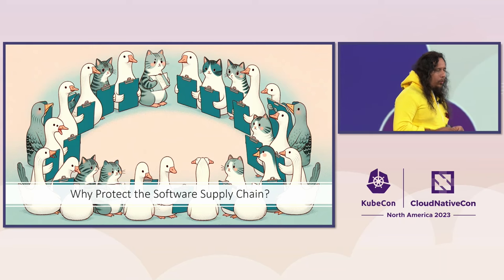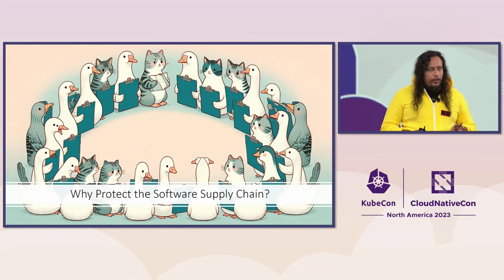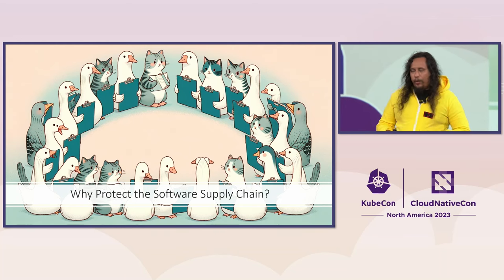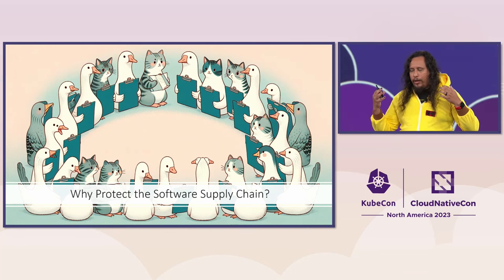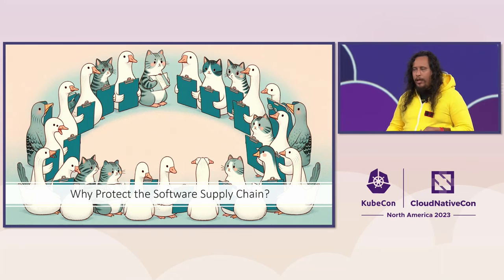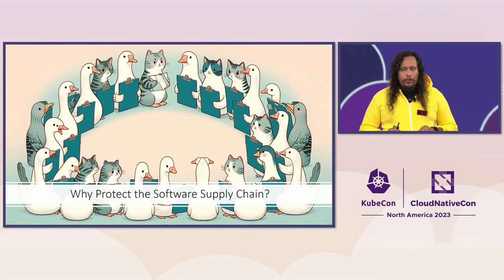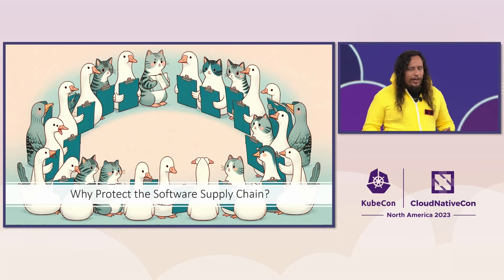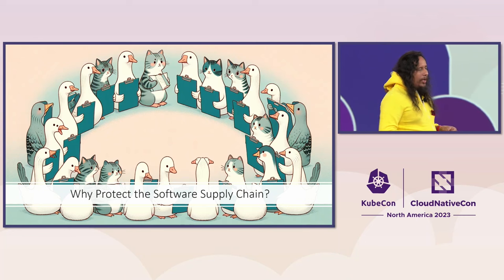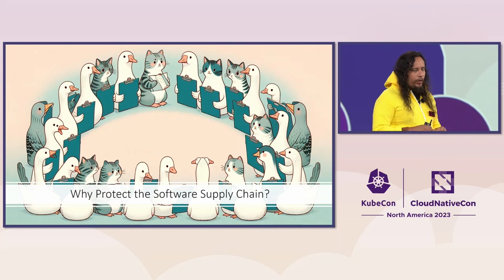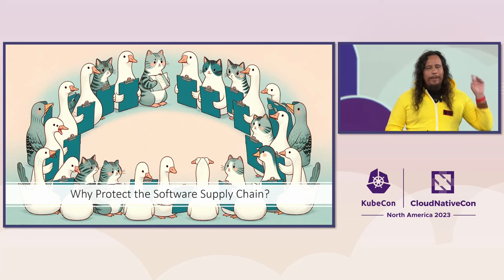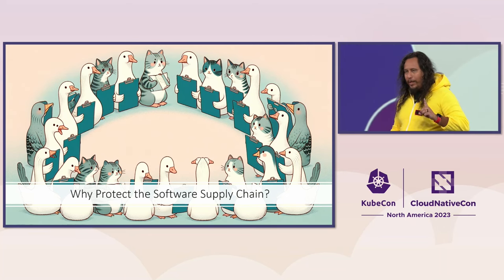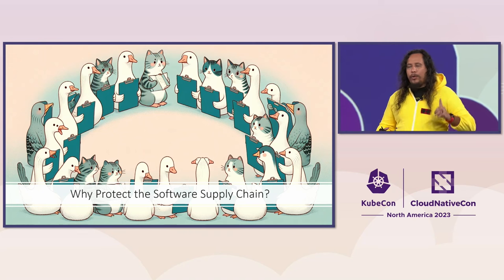So why do we want to protect the software supply chain? There are two things we need to look at. Most people, when we ask what do we want to defend, immediately think about how do we defend from an attacker getting into the system. That's a very important aspect, but it's not the whole story. And I know you hear it all the time — every time you go to a security talk, you hear about Log4Shell. But there's one particular aspect many people don't tend to think about: why was Log4Shell so expensive?